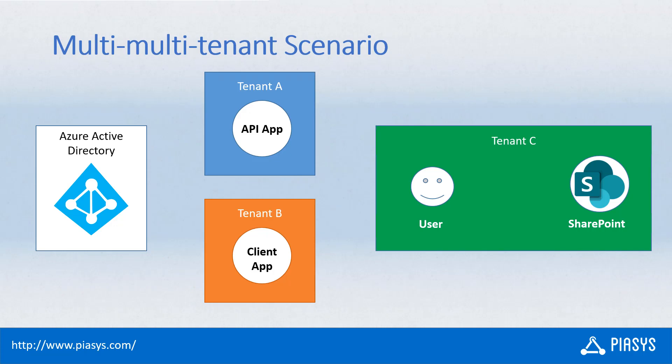Let's look at an architectural diagram to better understand the overall solution. Here we have a tenant C with a user who wants to leverage a client application defined in tenant B as a multi-tenant application, which will consume an API app registered in tenant A as a multi-tenant application. The API app will consume content from the SharePoint Online tenant for the user in tenant C on behalf of that user, and provide the resulting data back to the client application.